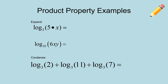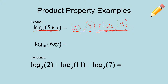Let's open the product property flap. We have three problems to go through — the first two want us to expand the log and the last one wants us to condense. On the front of the product property flap, we had log base 3 of something times something. We can break that up into log base 3 of 5 plus log base 3 of x. This is expanding: the shorter form becomes the longer form.